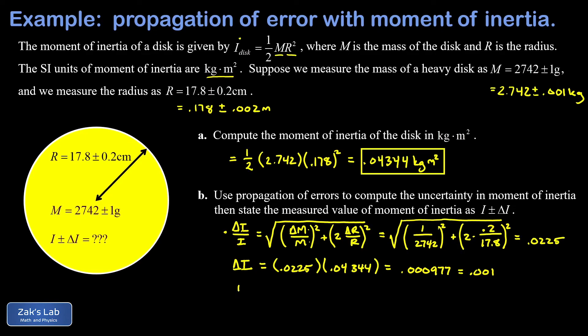And then to state our final answer, that's I plus or minus delta I, we go ahead and round the original moment of inertia to the same decimal place addressed by the uncertainty. So that's the thousandths place, so I get 0.043 plus or minus 0.001 kilogram meters squared, and we're done.